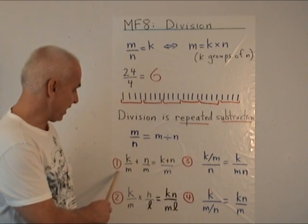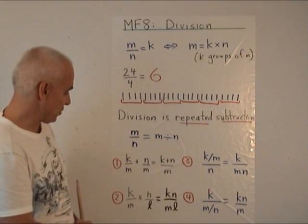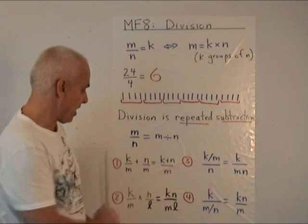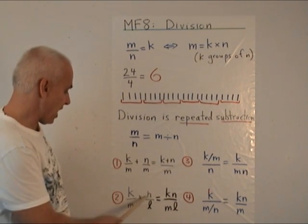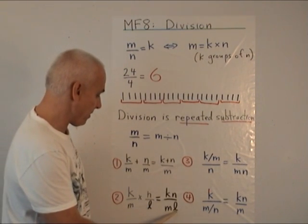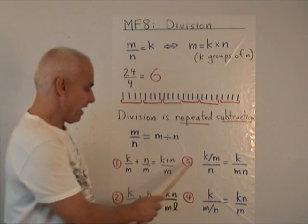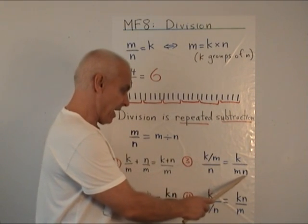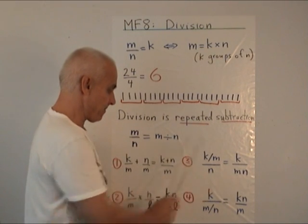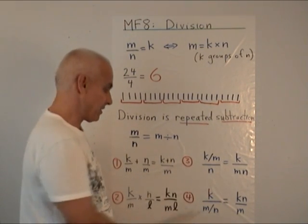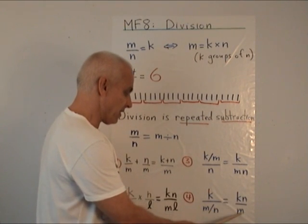Here are four main laws of division. k over m plus n over m equals k plus n over m. k over m times n over l is k times n divided by m times l. k divided by m all over n is k divided by mn, the product mn. And k divided by m divided by n is k times n divided by m.